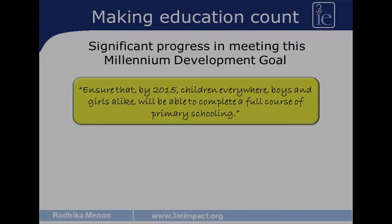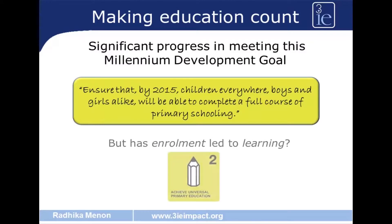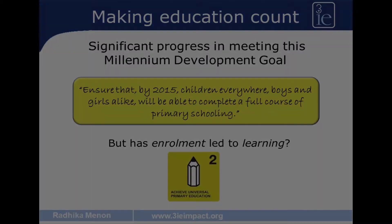The majority of developing countries have made significant progress in achieving the Millennium Development Goal of Universal Primary School Enrollment by 2015. But has all of this increase in enrolments really led to an increase in learning? This is a serious development question.